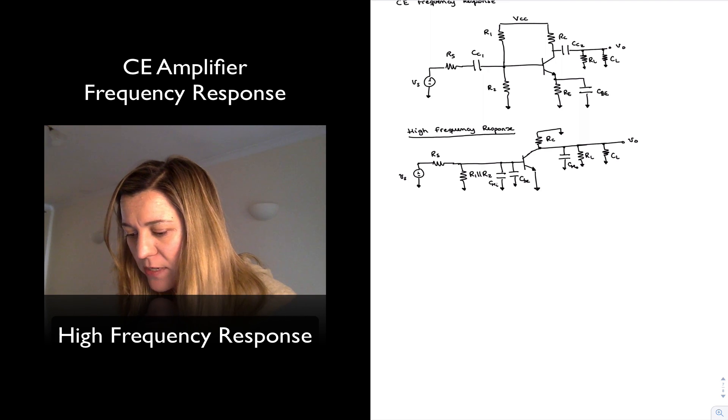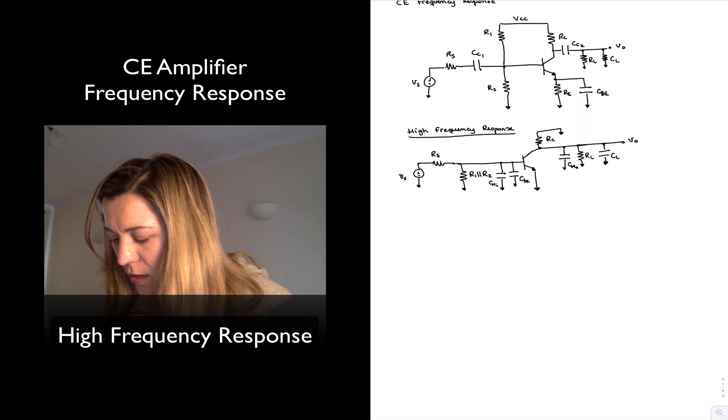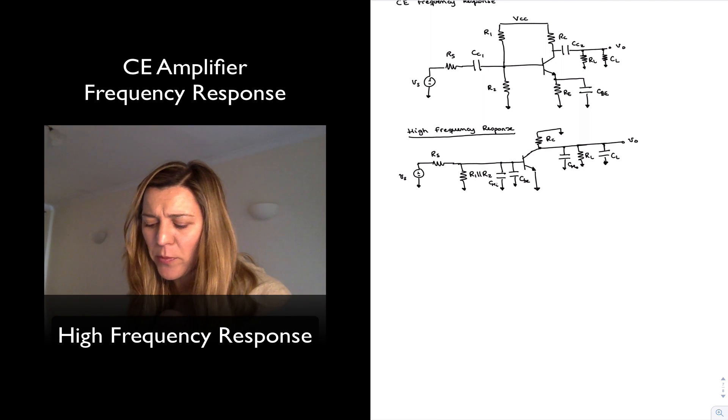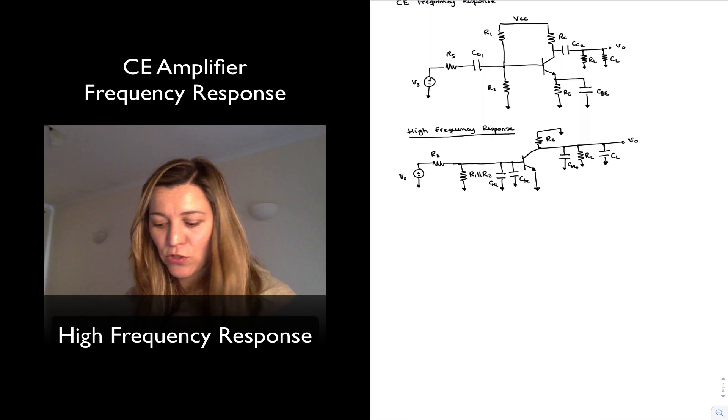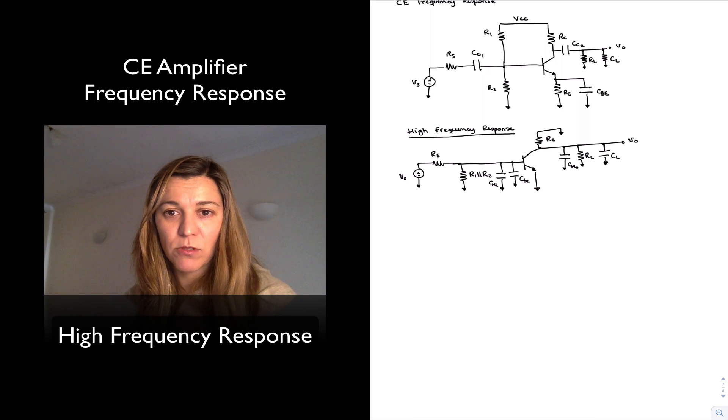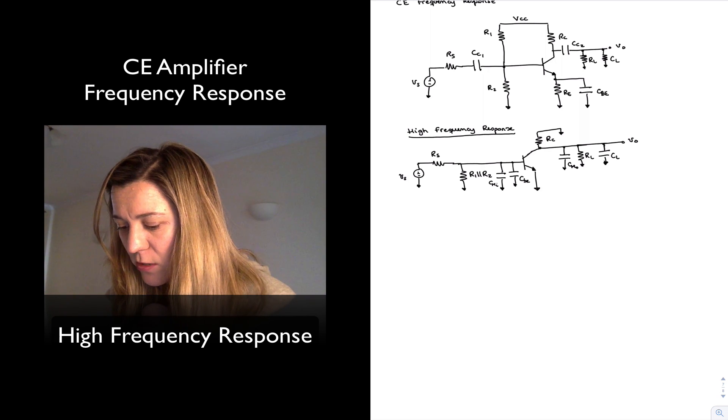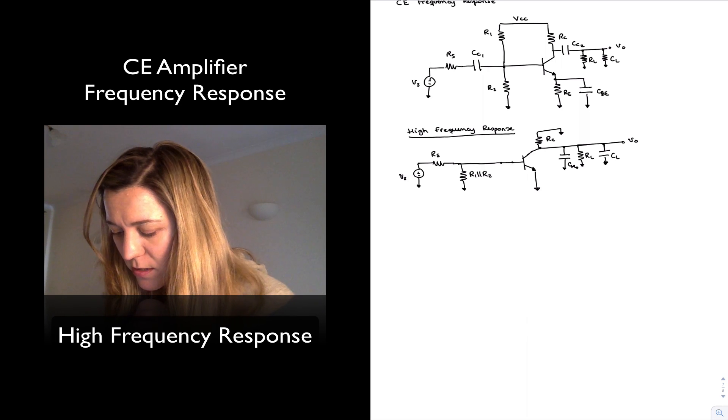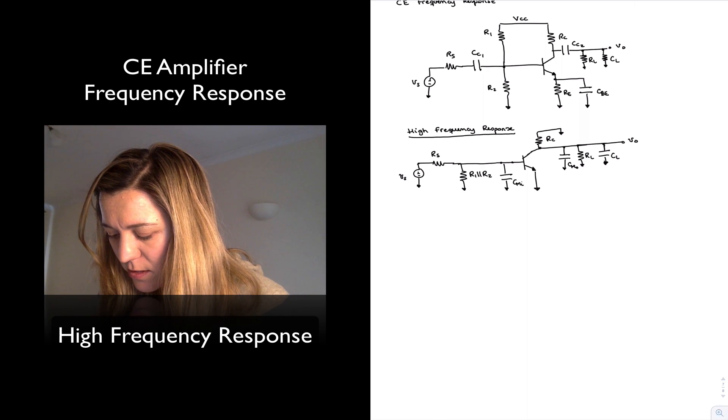Now, you may say, well, there are four capacitors here. And I just noticed I wrote CL as a resistor, but that's actually a capacitor. You may say there are four capacitors here, shouldn't we have four high cutoff frequencies? But notice that they are connected in parallel with each other. So CMI is connected in parallel with CBE. So the parallel combination of the two is just going to be equal to an equivalent capacitance of value equal to CMI plus CBE. In other words, I can combine these two capacitors as just being one capacitor of value CMI plus CBE.